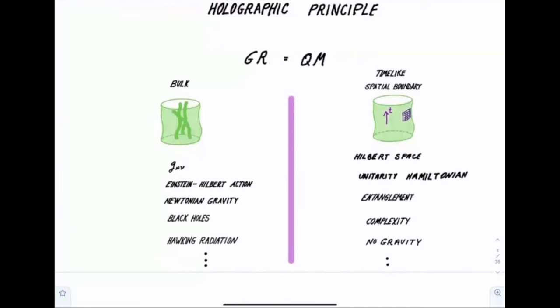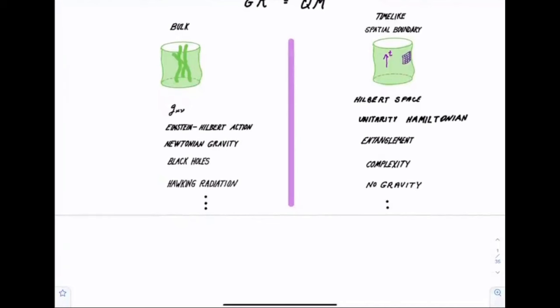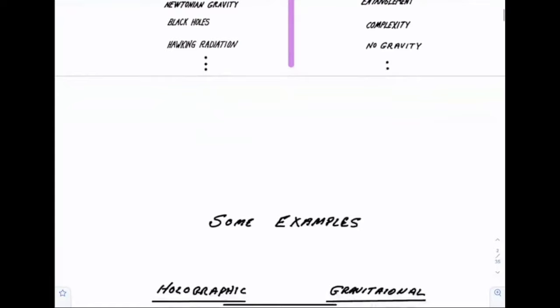On the other side of the divide is the holographic theory, or the hologram. Again, time-like spatial boundary, and on that boundary there's a theory of some sort which is purely quantum mechanical. It has a Hilbert space, unitarity, a Hamiltonian, things like entanglement, complexity, but it does not have gravity, at least not in its formulation.